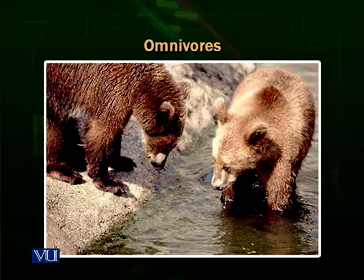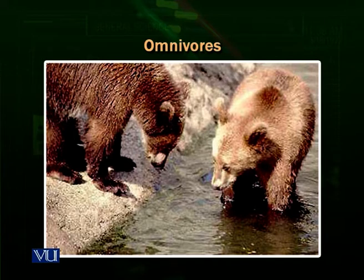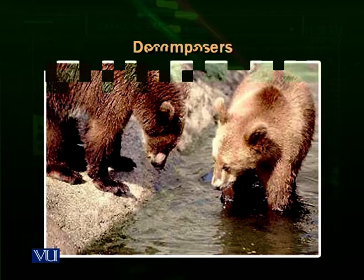Omnivores — bears. Bears can eat both plant and animal matter. If they get a small animal to eat, they eat it. If they get plants, legumes or other plants, they eat the plants. So they are also omnivores like us.